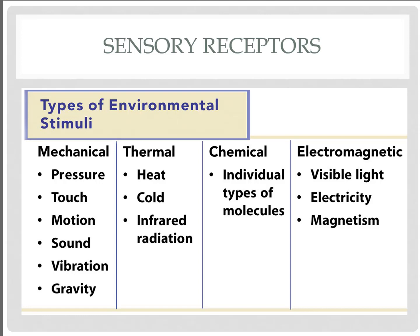What types of stimuli exist? They can be broken down into mechanical, thermal, chemical, and electromagnetic. We'll learn about the types of receptors that receive this information and transduce it into our graded potentials.